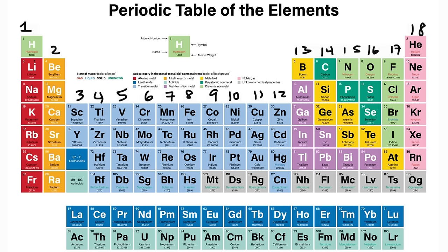Group 1 or 1A has one valence electron. Group 2 has two; group 3A has three; group 4A has four; and then 5, 6, 7, and 8. Helium is an exception — it has two valence electrons — but the other noble gases like neon, argon, and krypton have eight valence electrons. A valence electron is an electron in the outermost energy level of an atom.